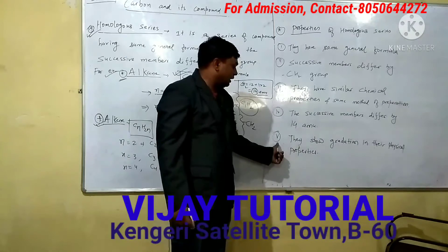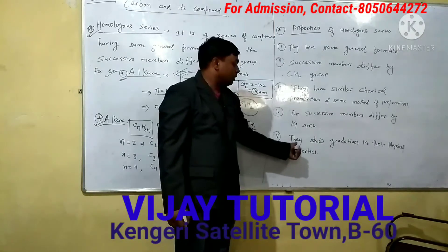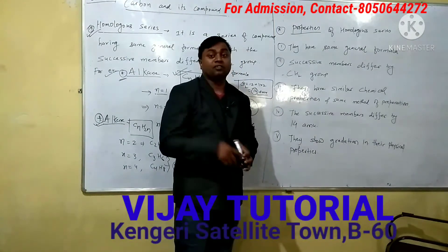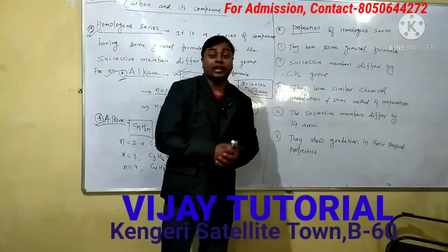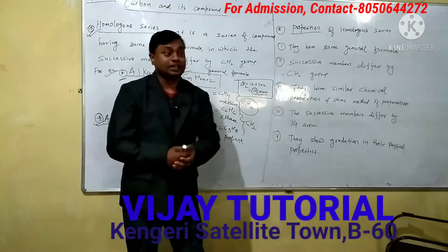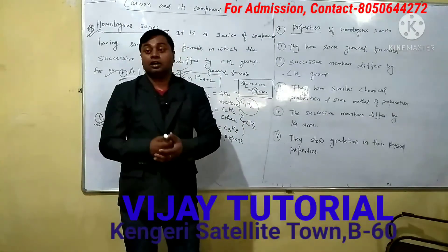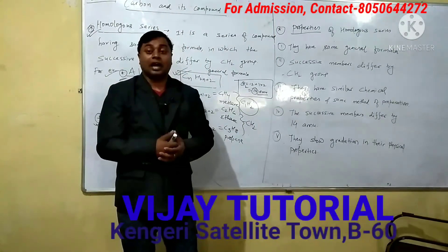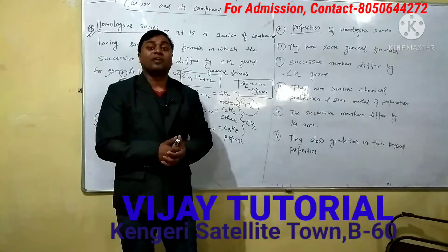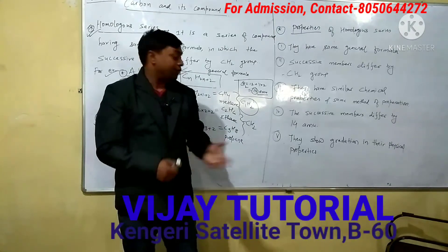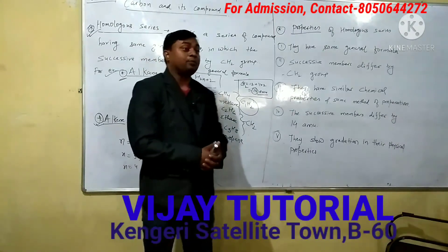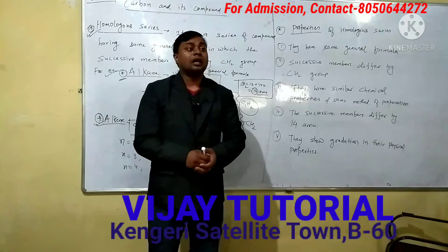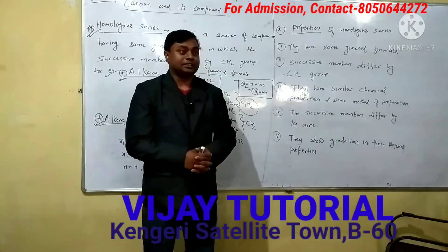The difference of 14 atomic mass units is there between successive members. One more property you can write: gradation in their physical properties. The first few members of alkanes are gases. Up to C17 they are liquids. After that, higher members are waxy solids. Even their melting point and boiling point will vary as the number of carbon atoms increases.